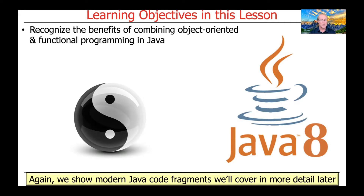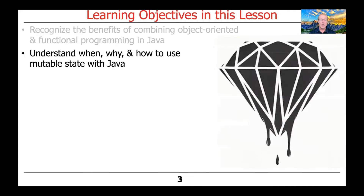As usual, we'll show some examples to help things be a bit more concrete. We'll also talk about when and why to use mutable shared state in Java. Although this is largely discouraged, there are some times when it could be useful, and so we'll talk about when and how to do it.